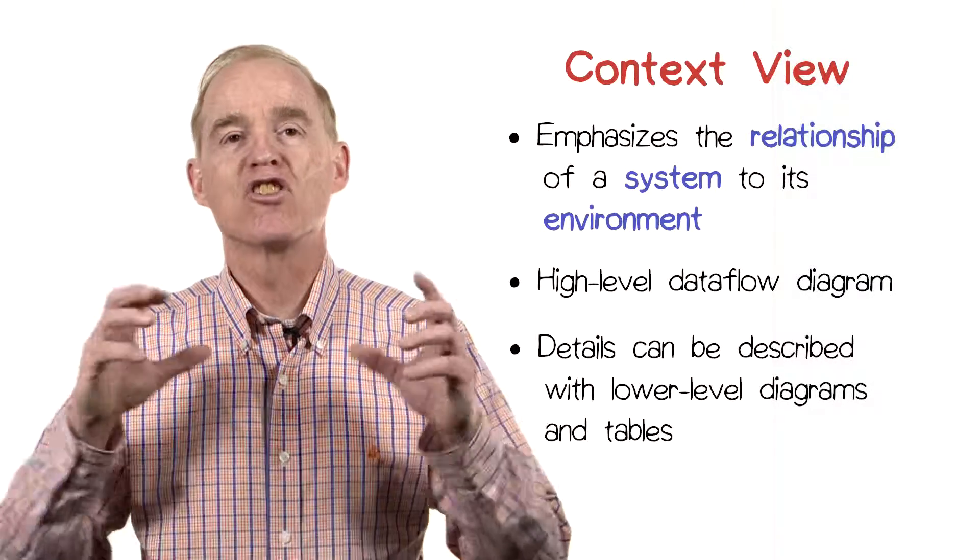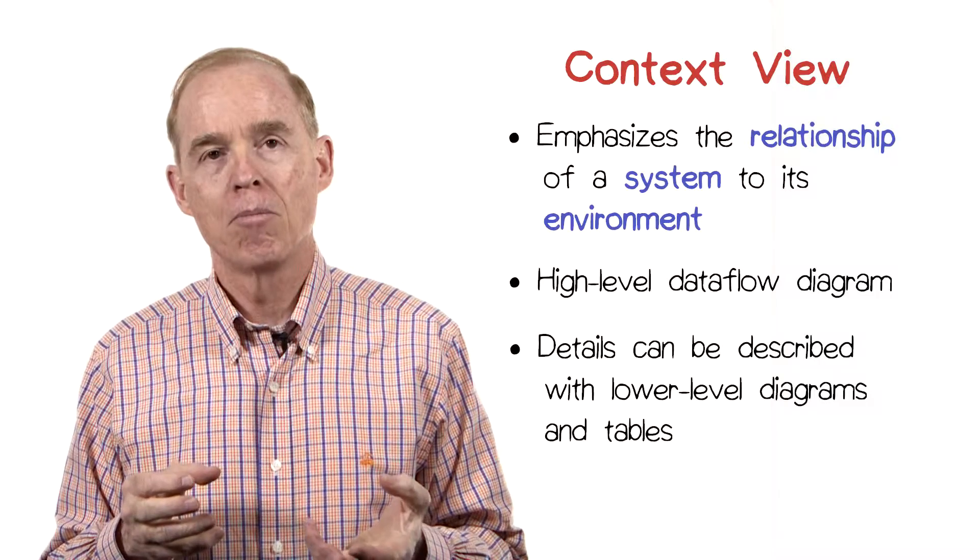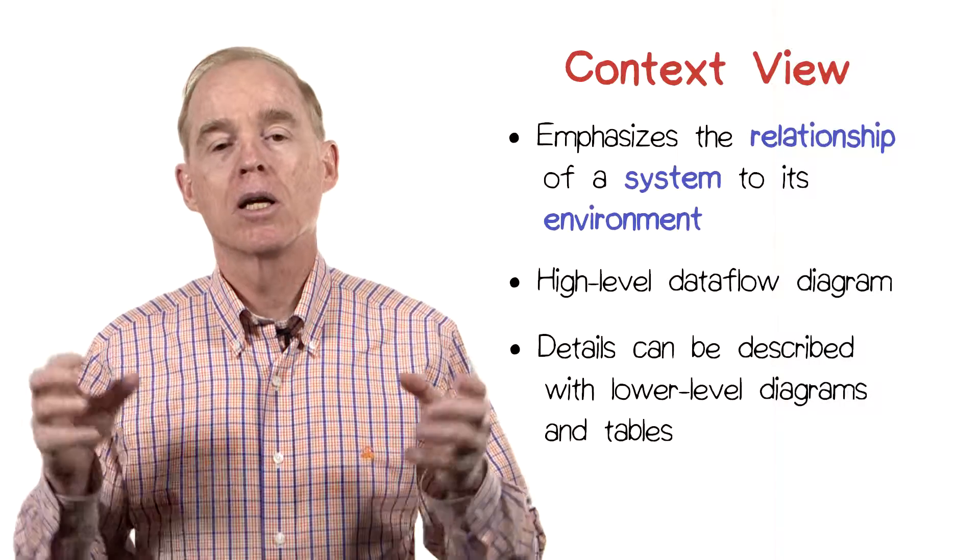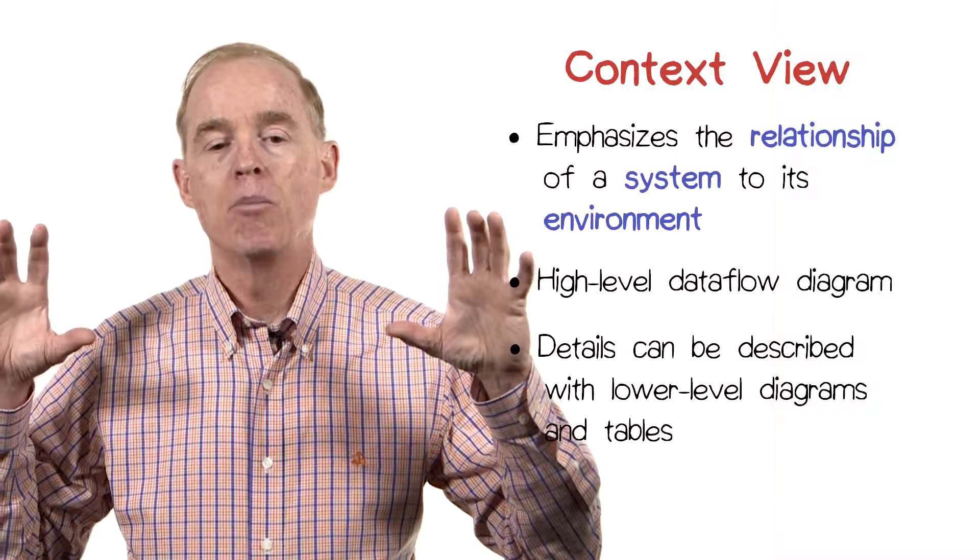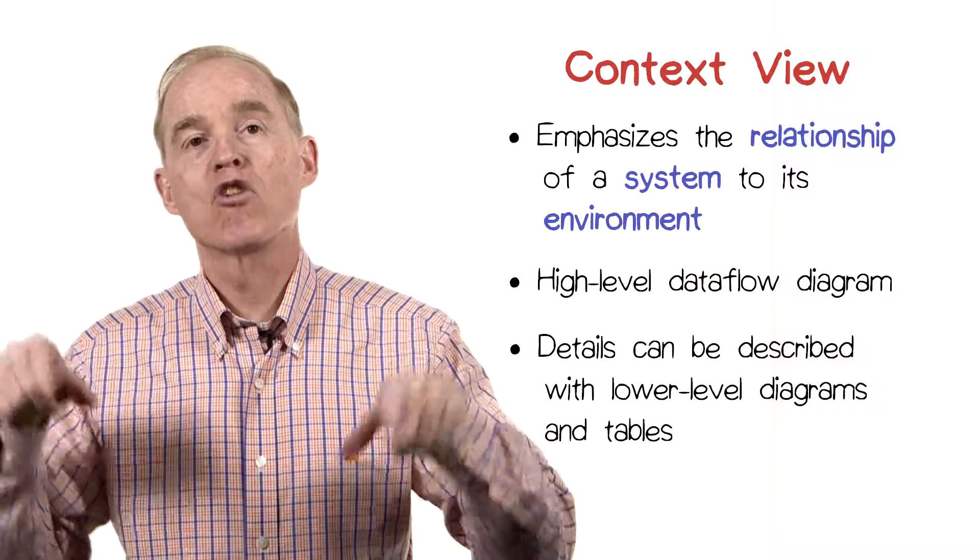In the context diagram, there's a single oval which denotes the system as a whole. That oval can be connected to various external actors.